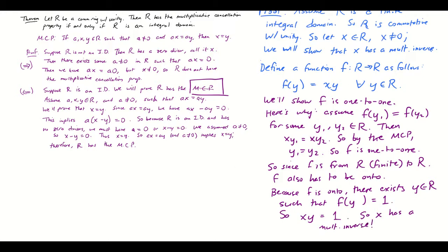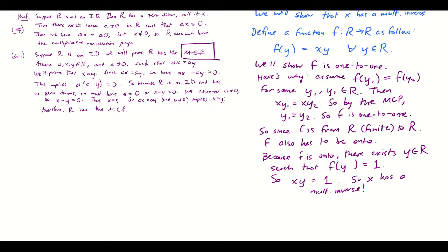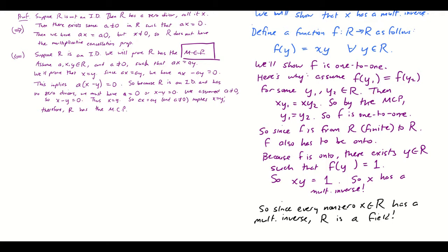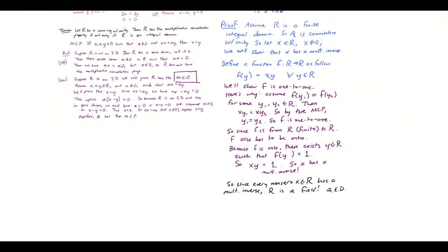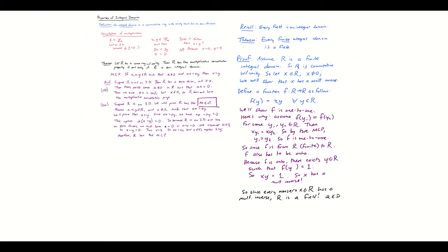That was true for every non-zero x — I didn't assume anything special except it being non-zero. Since every non-zero x in R has a multiplicative inverse, and R also has commutativity and a multiplicative identity, R is a field. QED. That's just such an elegant little proof. We don't know that every integral domain is a field, but every finite integral domain is a field — and as a result, the finite integral domains are exactly the finite fields, of which there's a whole interesting study.